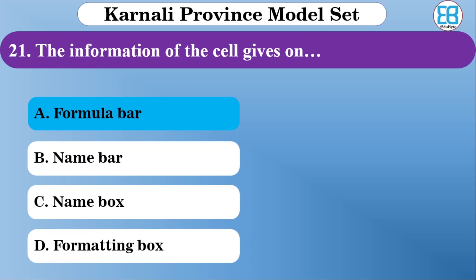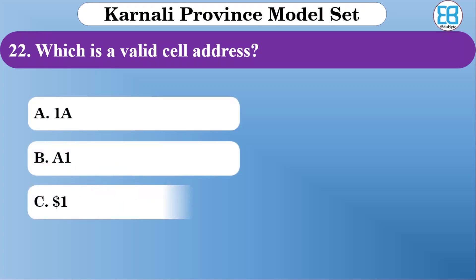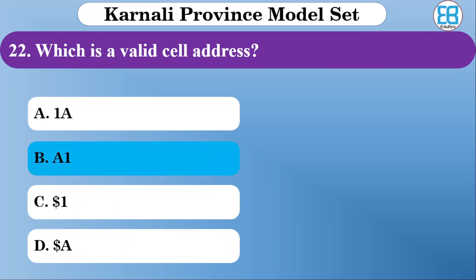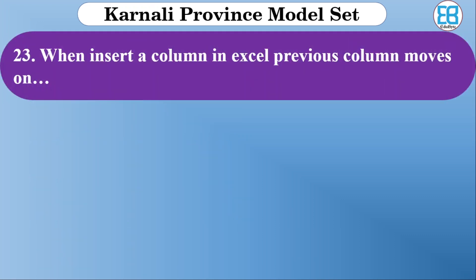Which is a valid cell address? The options are A1, 1A, string A, and A string. The correct option is A1 — a column letter followed by a row number, like A1.